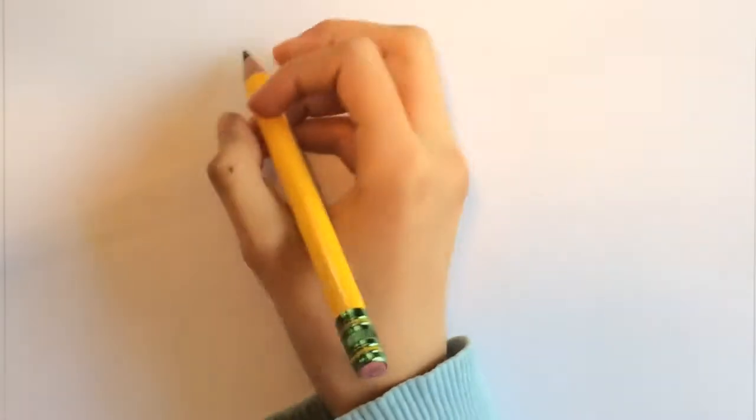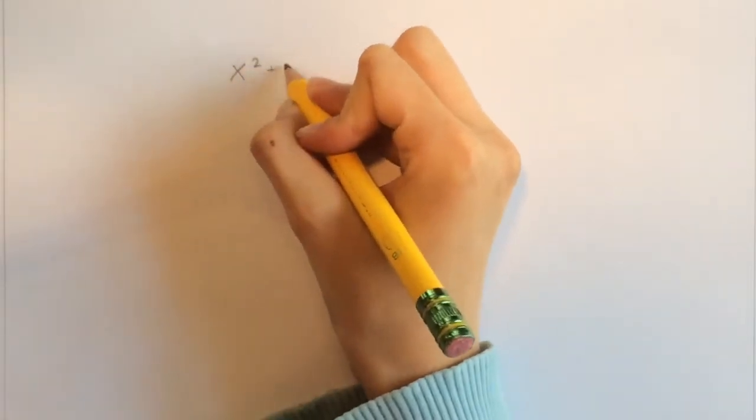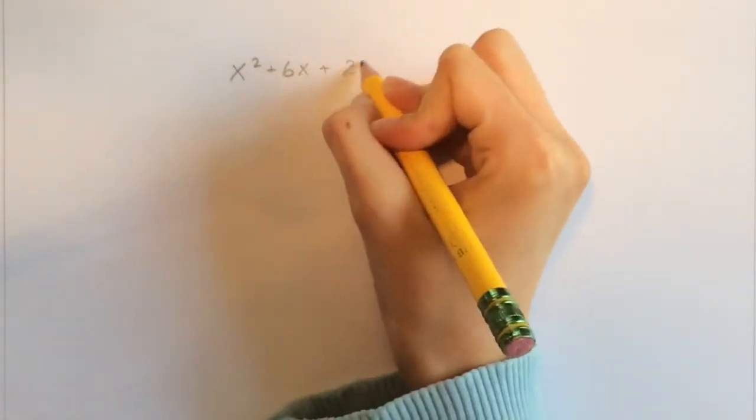Hello. Today I'm going to show you how to convert a polynomial into a perfect square. Most polynomials are not a perfect square, and the one we're going to be working with today is x² + 6x + 21.